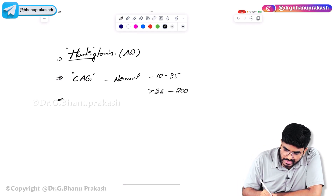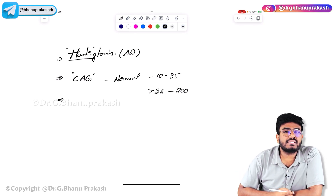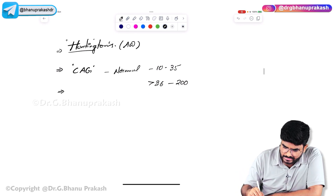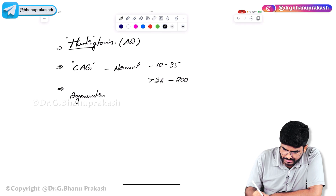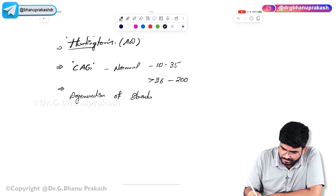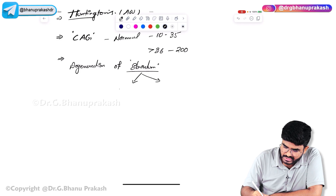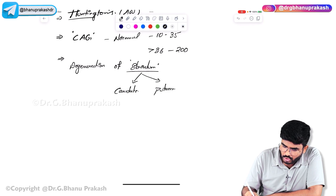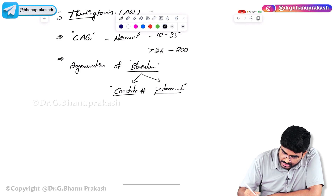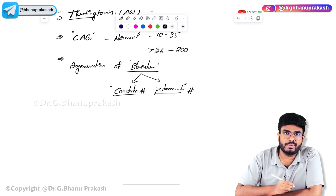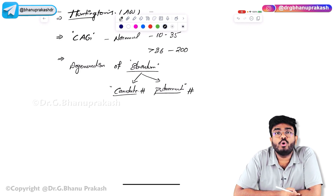Because of these trinucleotide repeats, there is degeneration of the striatum, which is part of the basal ganglia. The striatum includes two structures: the caudate and the putamen. These two structures get damaged, and the neurons in this area undergo neurodegeneration.